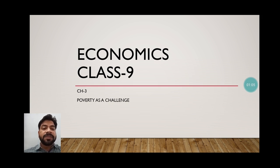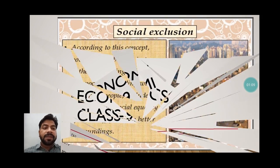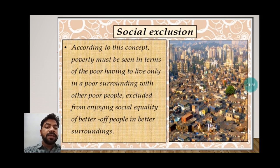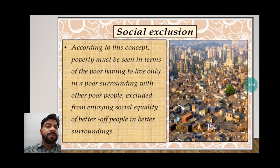Here we will see some of the problems which poor people generally face. First is social exclusion. According to this concept, poverty must be seen in terms of the poor having to live only in poor surroundings with other poor people, excluded from enjoying the social equality of people in better surroundings. Slum areas like these are common in cities — many times the government just clears these slums. These are encroached areas, a sign of migration as well as poverty. These people are forced to live in such surroundings and cannot match with people living in the mainstream — they are separated from the mainstream.